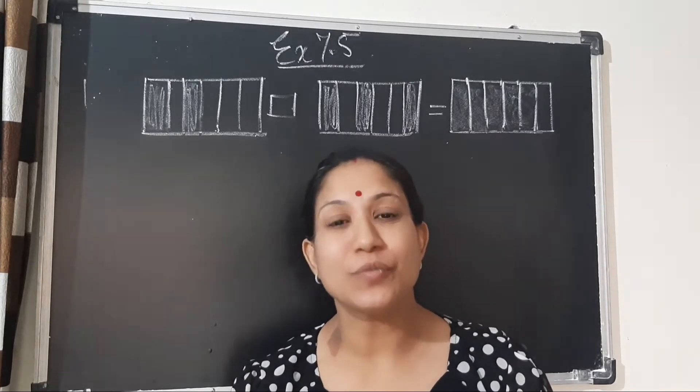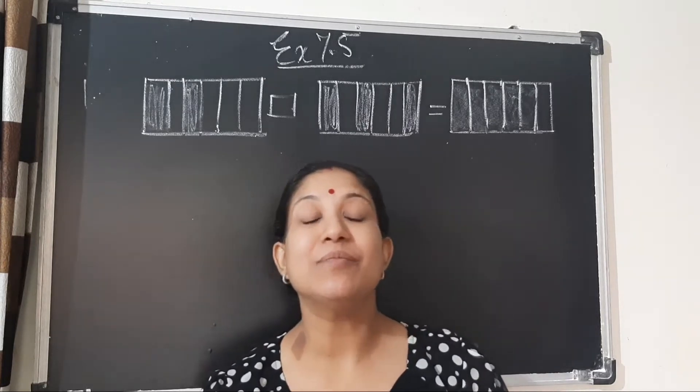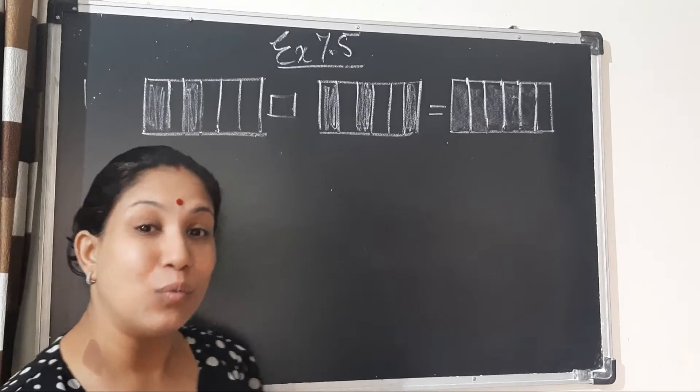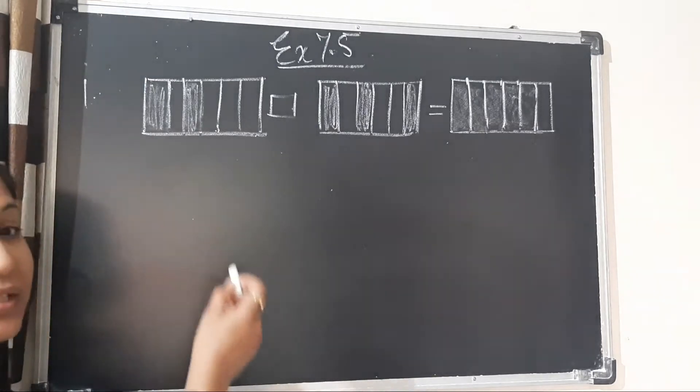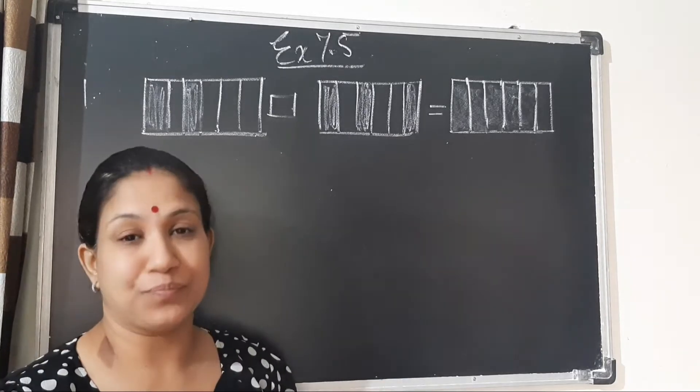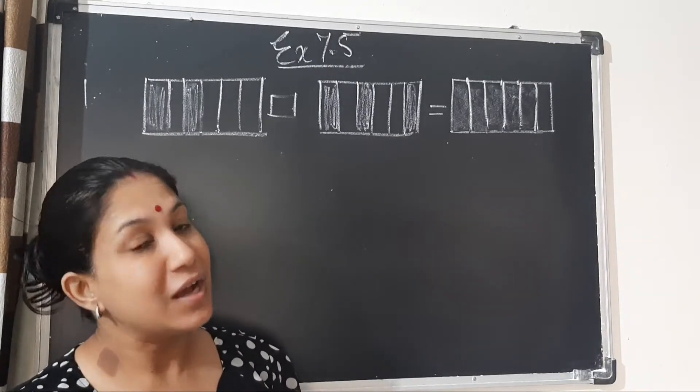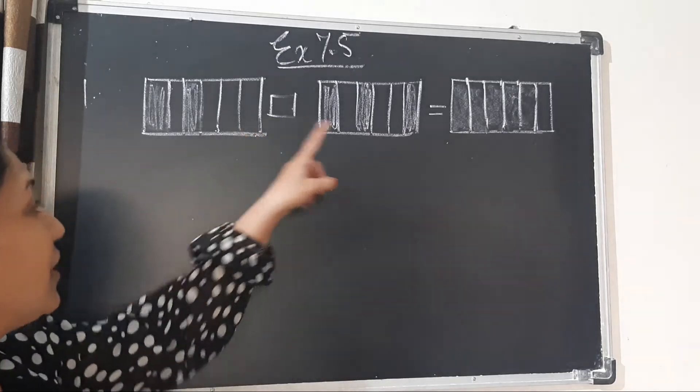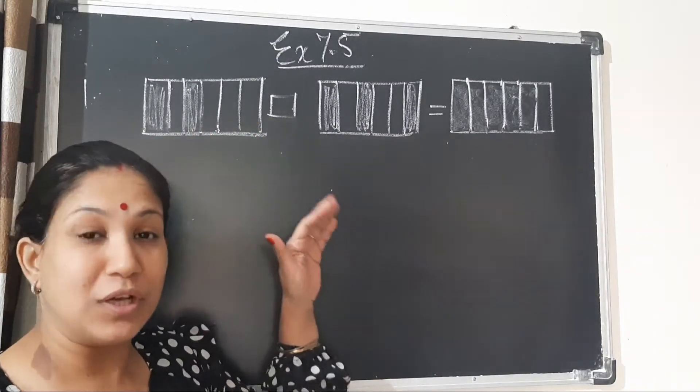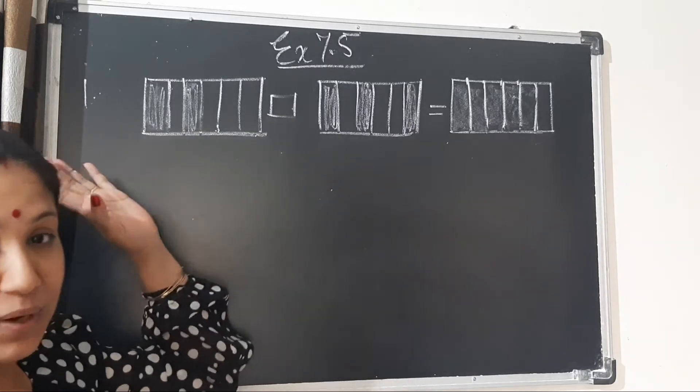See the first question. It is given in figure form. Let us find out what is given and what has to be done. You can see the figures with some portions shaded and some unshaded. The same figure is given three times in your book.